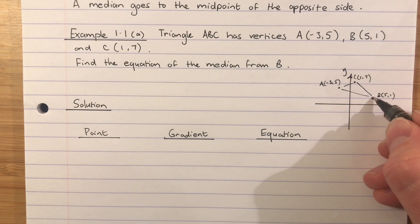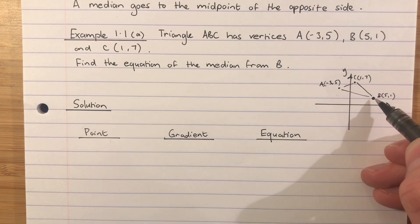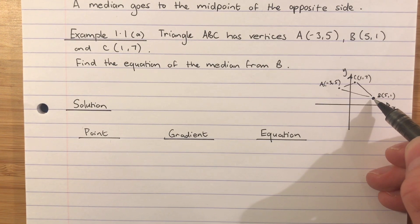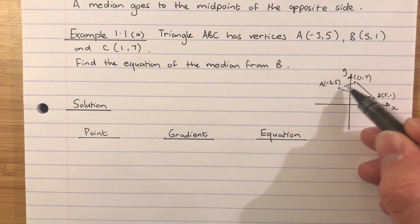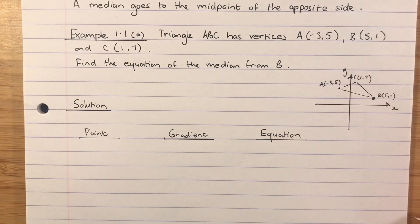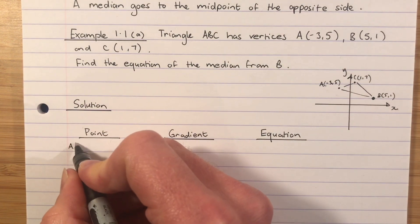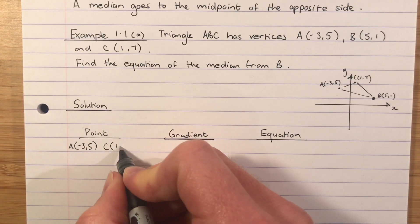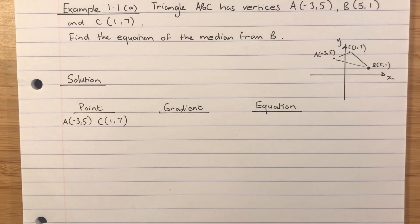The one thing we know about medians is that a median goes to the midpoint of the opposite side. It's the median from B, so you should be thinking, where's that line going to go? It's going to go to the midpoint of the opposite side. The opposite side from B is AC. So AC is what I need to find the midpoint of. I'm going to take A and C and plot them down here: (-3, 5) and C (1, 7).